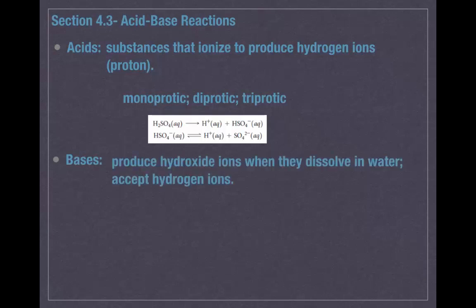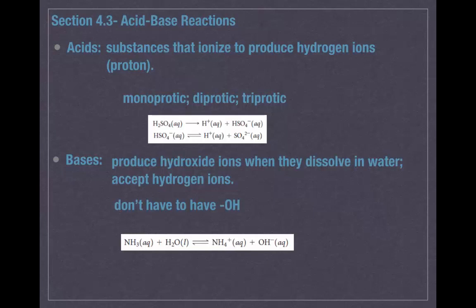When we're talking about bases, bases produce hydroxide ions. For example, magnesium hydroxide, Mg(OH)2, when it ionizes produces OH with a negative one charge when it dissolves in water. However, a base can also accept hydrogen ions. For a base to be a base, it doesn't necessarily have to produce hydroxide ions. For example, ammonia can accept a hydrogen ion from water, acting as the base and producing ammonium, NH4+, and hydroxide with a negative one charge. It's important to remember that a base does not necessarily have to have OH.